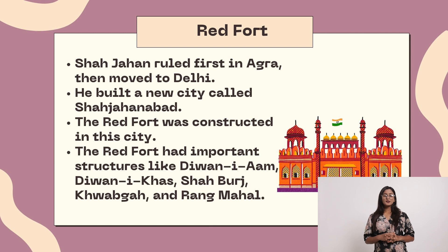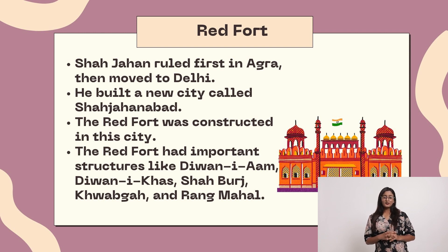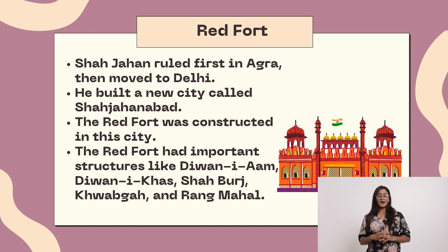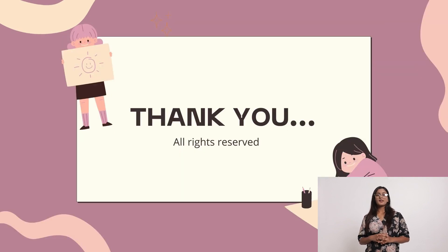Red Fort: Shah Jahan ruled first in Agra, then moved to Delhi. He built a new city called Shahjahanabad. The Red Fort was constructed in this city. The Red Fort had important structures like Diwan-e-Aam, Diwan-e-Khas, Shabuch, Khwabgah and Rang Mahal. Thank you.